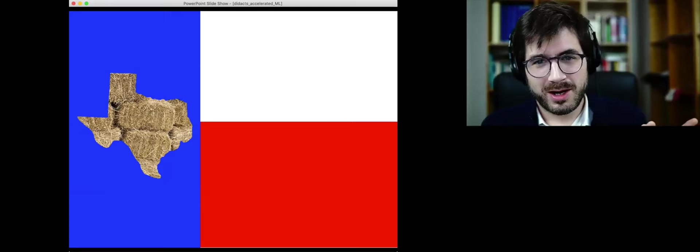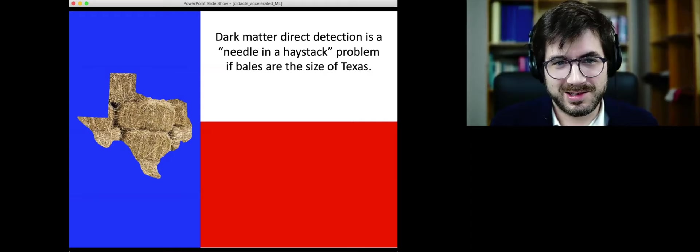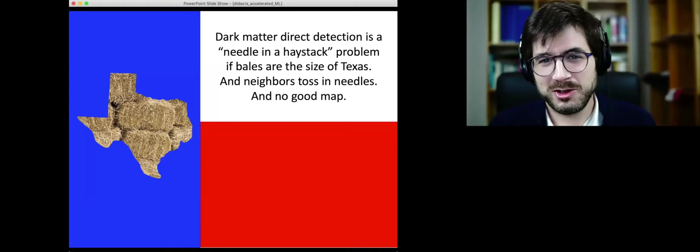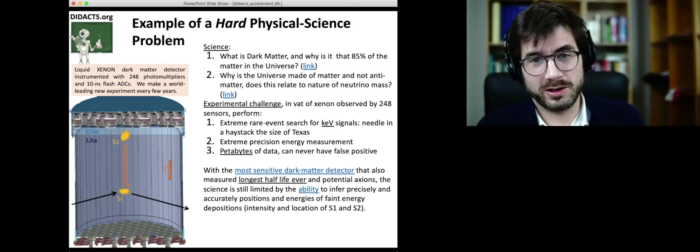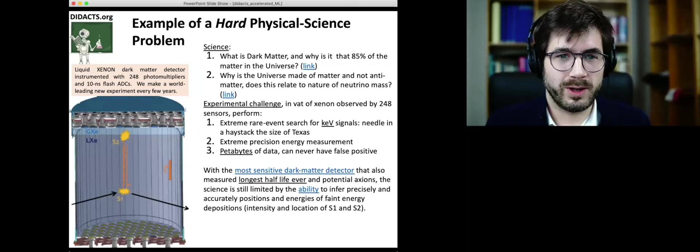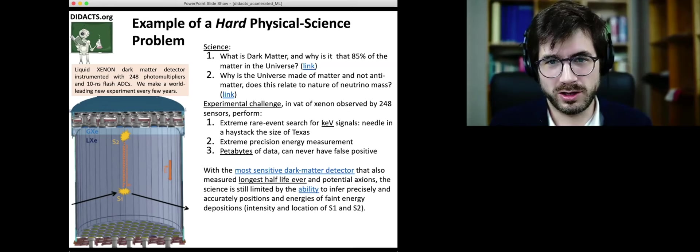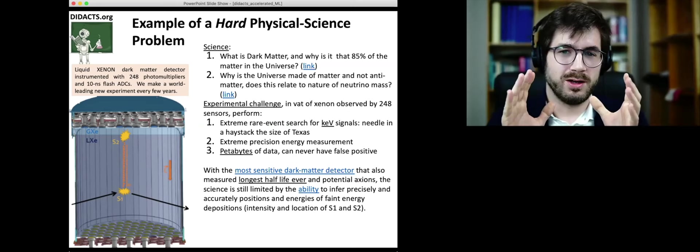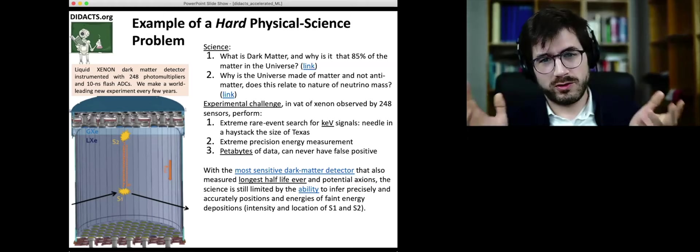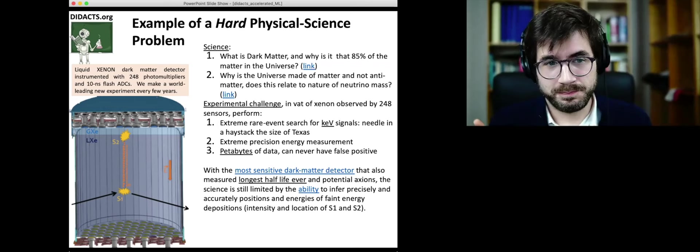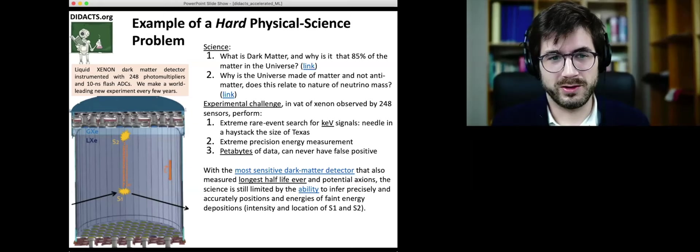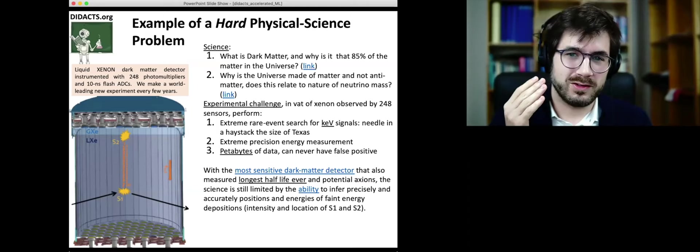Dark matter direct detection is a needle in a haystack problem if the bales are the size of Texas, and your neighbor is tossing in needles continuously, and you don't have a map so you keep losing track of where you are. Our science case is trying to directly observe galactic dark matter bound in our halo. We also do neutrino-less double beta decay.